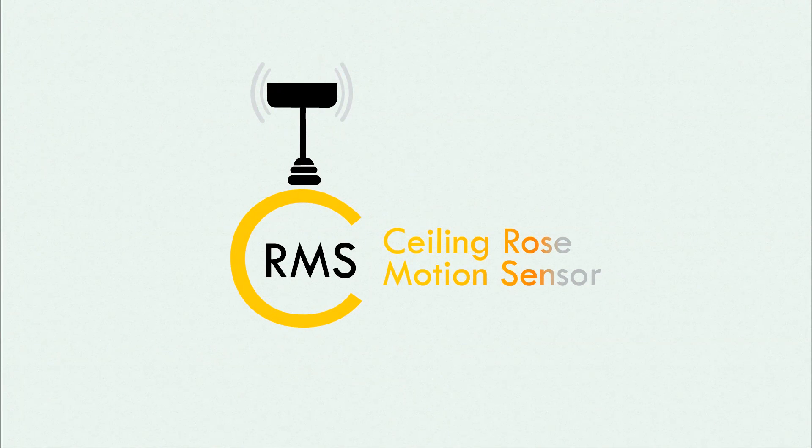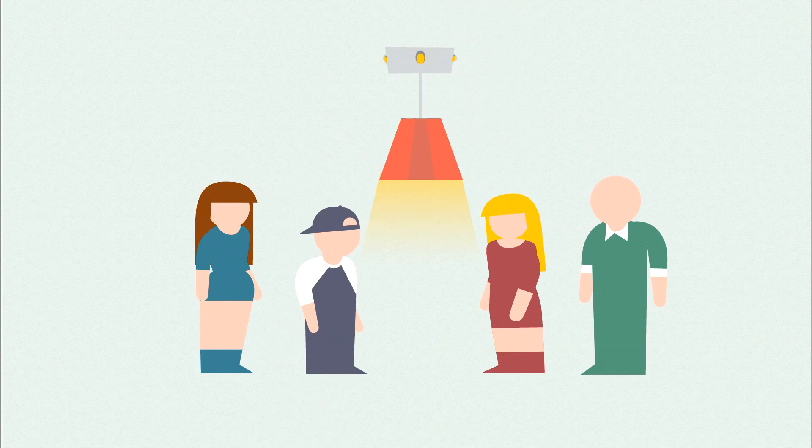Boom! Introducing the Ceiling Rose Motion Sensor. The Ceiling Rose Motion Sensor is a simple device that will turn off the ceiling lights whenever you leave a room.